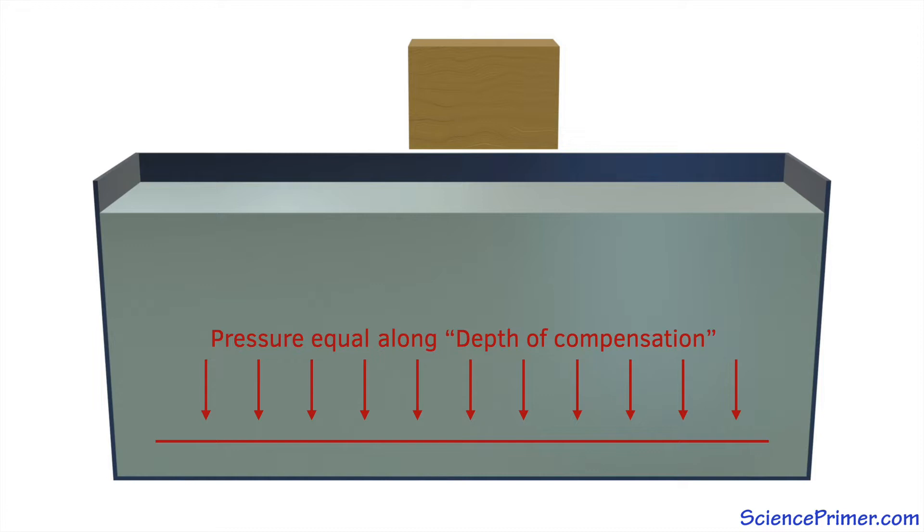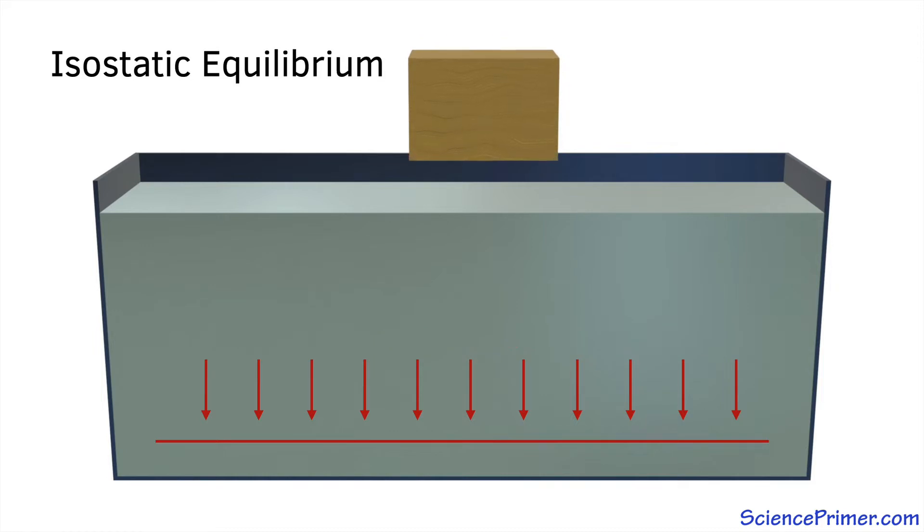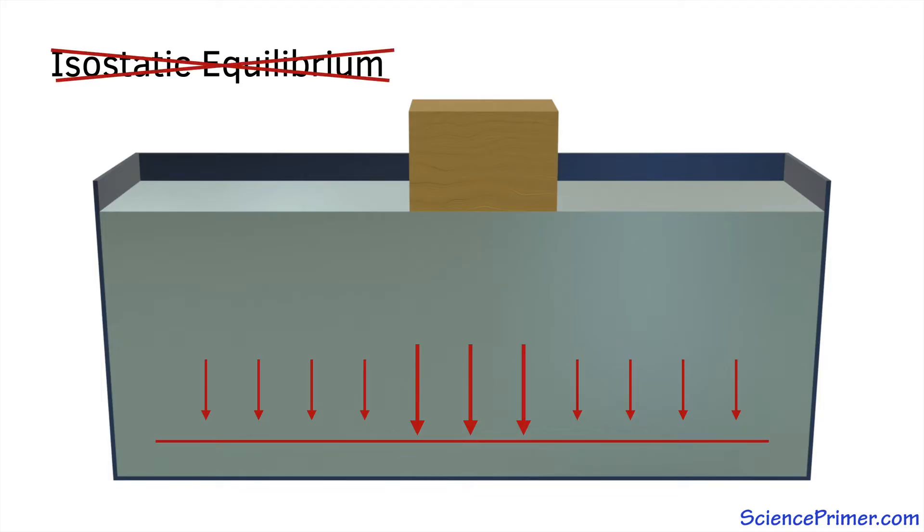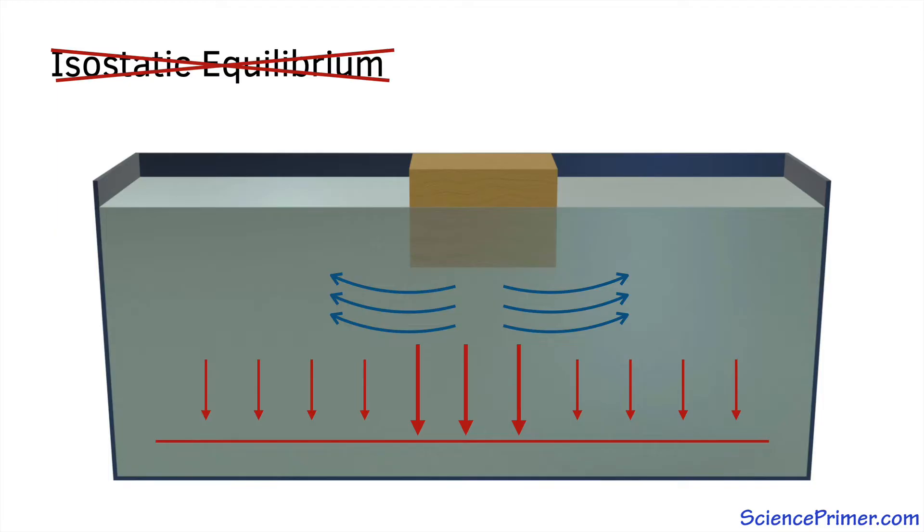And when pressure is equal at this depth, the system is in isostatic equilibrium. When a block of wood is placed on the water, the pressure below the block increases due to the added mass of the block pushing down. The system is no longer in isostatic equilibrium. As a result, water flows from the region of high pressure under the block to regions of lower pressure everywhere else in the container. As water flows out from under the block, the block sinks and pressure below the block decreases while pressure everywhere else increases. Water continues to flow out from under the block until the pressure is again equal everywhere along the depth of compensation.